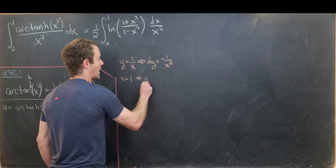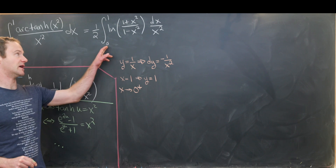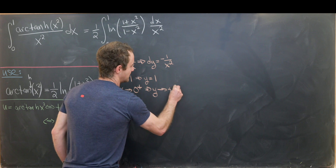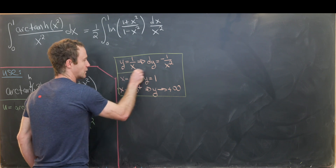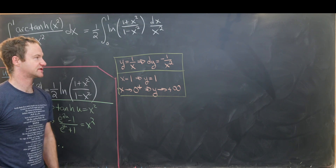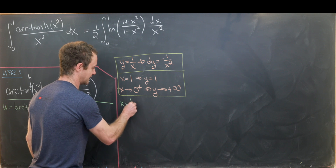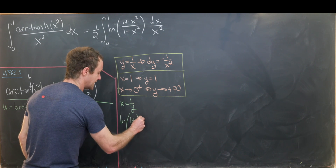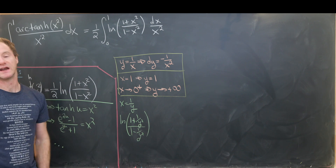With y = 1/x, we get dy = −1/x² dx, which is exactly what we need. When x equals 1, y also equals 1. When x approaches 0 from above — the lower bound — y approaches positive infinity. That sorts out the variable and the bounds. Since y = 1/x means x = 1/y, the argument becomes: ln((1 + 1/y²)/(1 − 1/y²)).